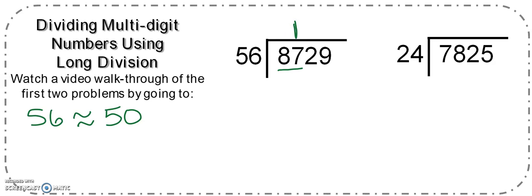So I'm going to make one group of 56. 1 times 56 is 56. Do my subtracting: 7 minus 6 is 1, 8 minus 5 is 3, and bring it down.